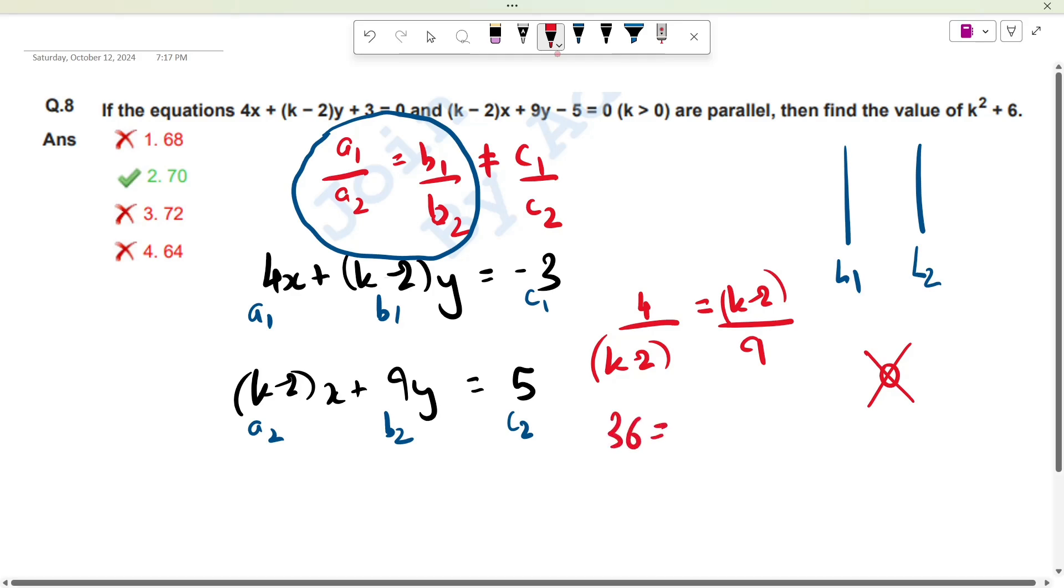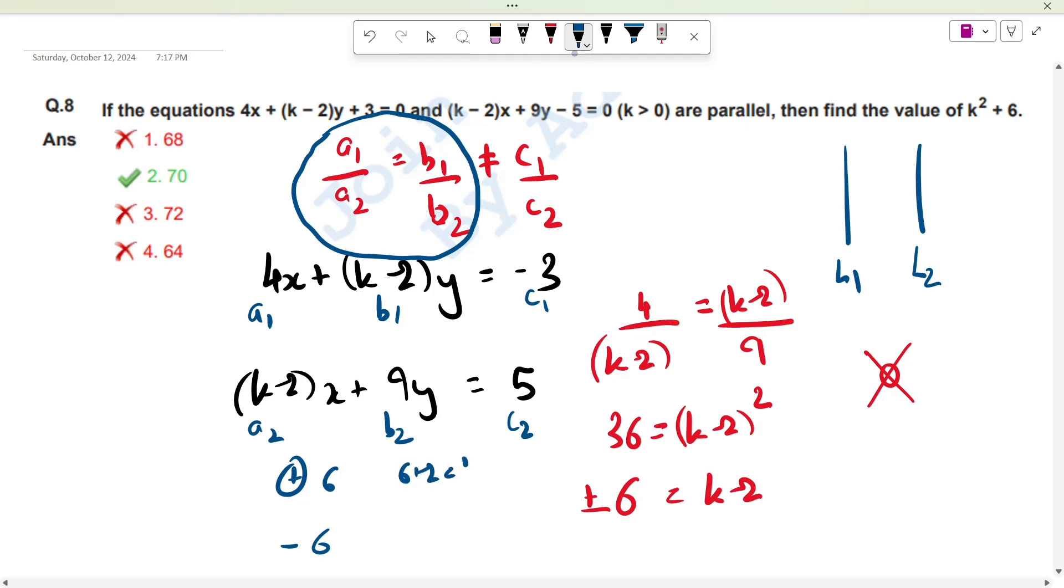So we will cross multiply. It will be 36 is equal to K minus 2 squared. Now you take square root, so it will be plus minus 6 is equal to K minus 2. But K has positive value. If it is positive 6, then 6 plus 2 equals K, which is 8. If it is negative 6, then minus 4 equals K. But K is positive because K is greater than 0. So K is equal to 8.